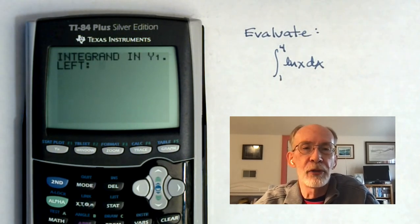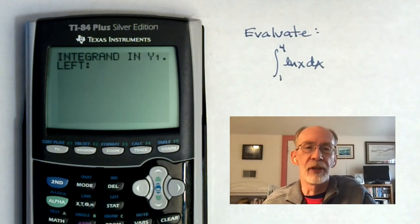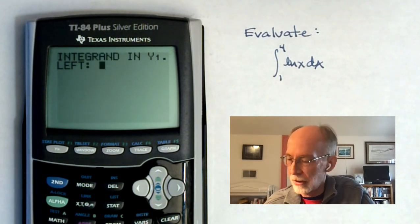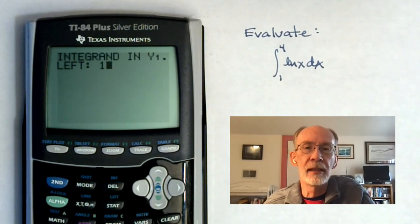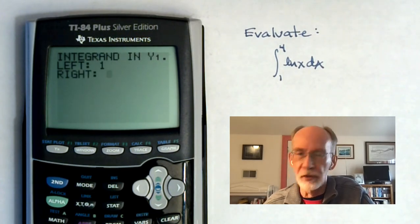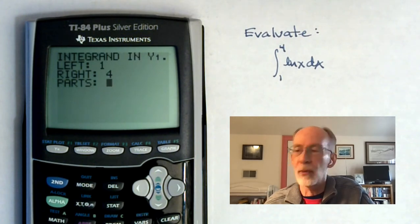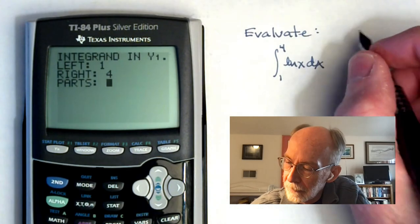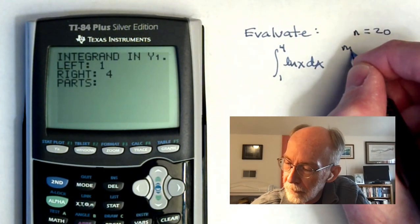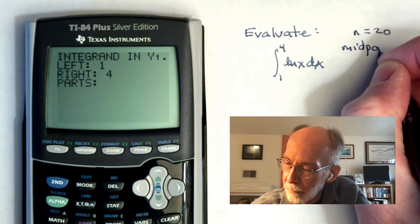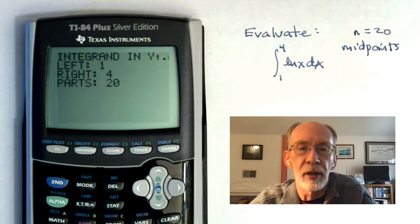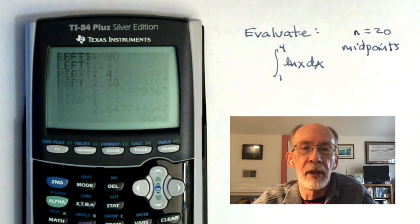And any program that you would use for this purpose would basically ask you for the same information in roughly the same way. So, my left or lower limit of integration is 1. My right or upper limit of integration is 4. And let's suppose that we're asked to do 20 midpoints. So, I will enter 20 for the number of subintervals or parts because it takes up less space on the screen.